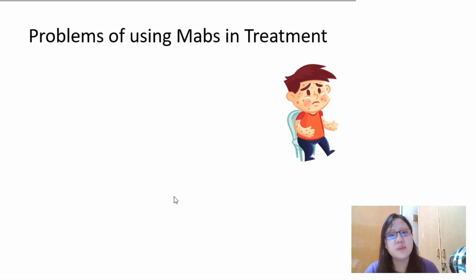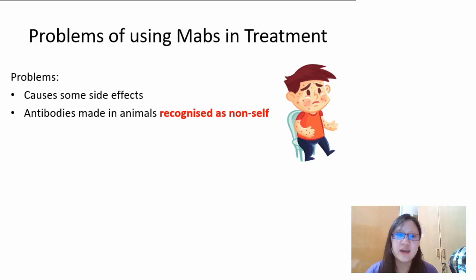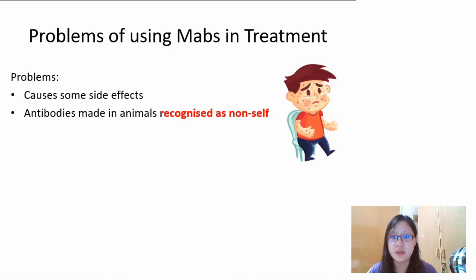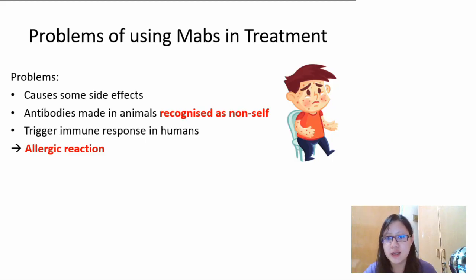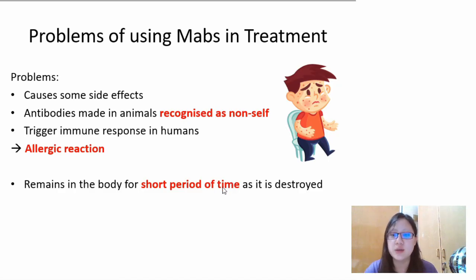However, it is not a perfect treatment. It causes some side effects — it is not perfect. The reason is that antibodies made in animals like mice or small mammals can be recognised as non-self. Your body knows whether that antibody belongs to you or not, and this triggers the immune response in humans — what we call an allergic reaction. Another problem is that it remains in the body for a short period of time, as it is destroyed after a while, because it's recognised as non-self and the immune system attacks it.